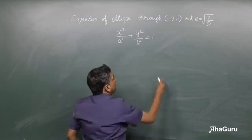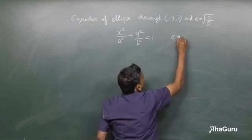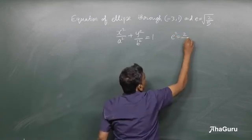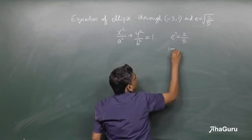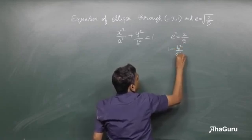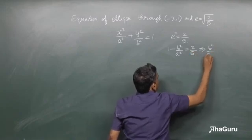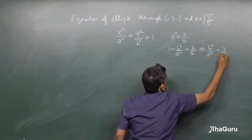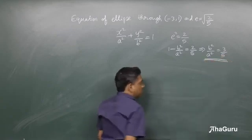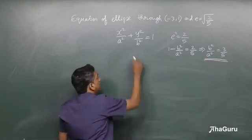It is in the standard form. We are given e equals root of 2 by 5, so e squared is 2 by 5. Therefore, 1 minus b squared by a squared is 2 by 5, which means b squared by a squared is 3 by 5. This is one equation we have in a squared and b squared.